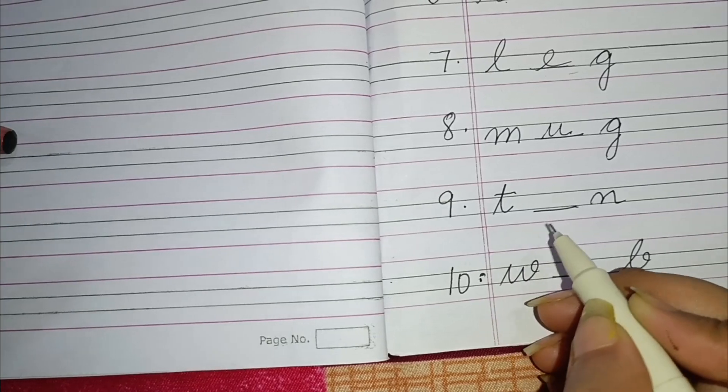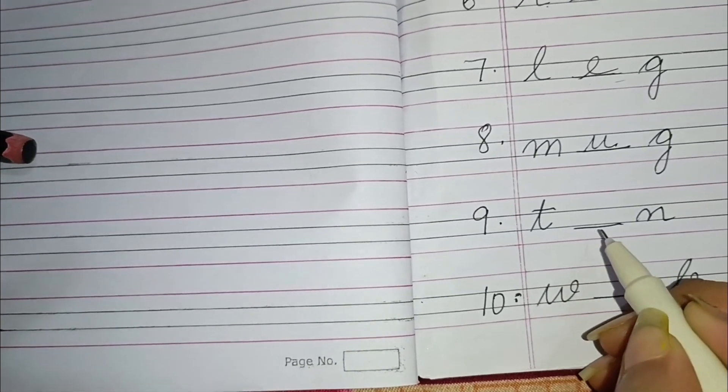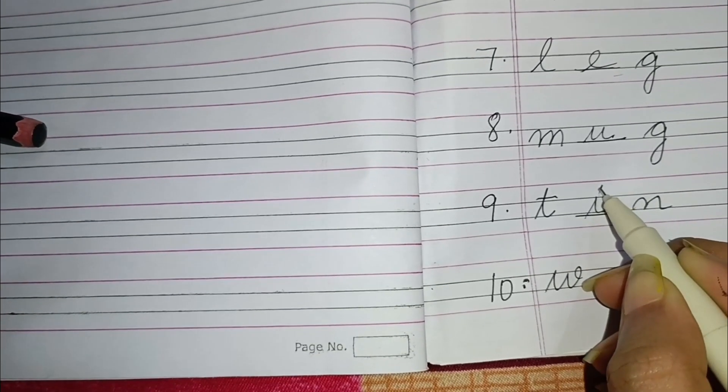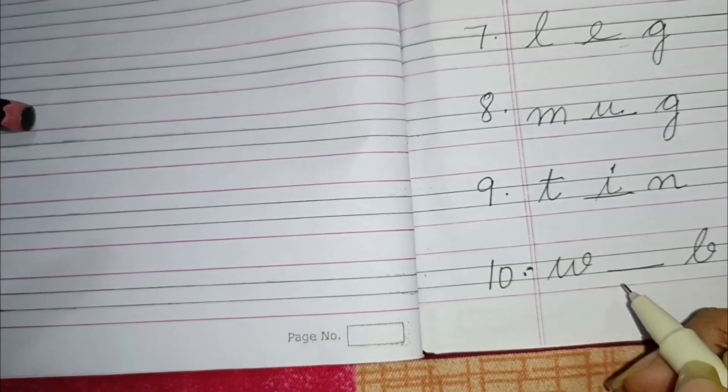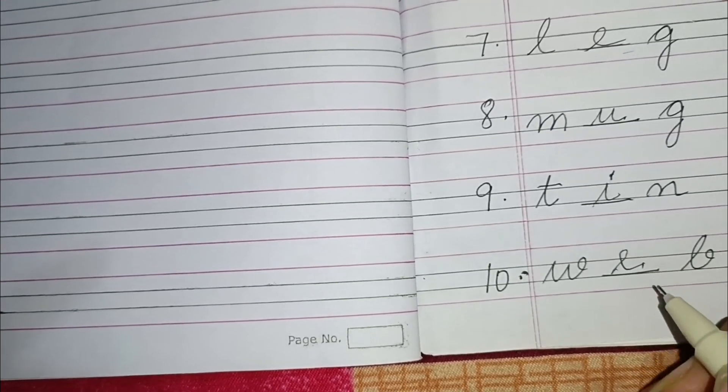Next is T dash N. So here it will be T I N, tin. Next is W dash B. So here it will be W E B, web.